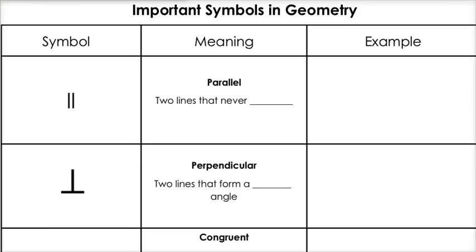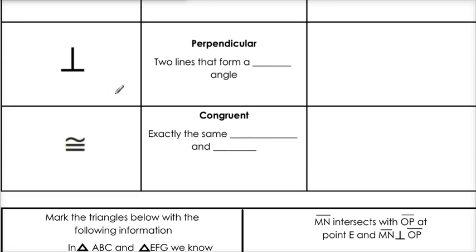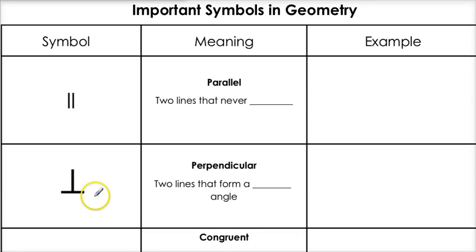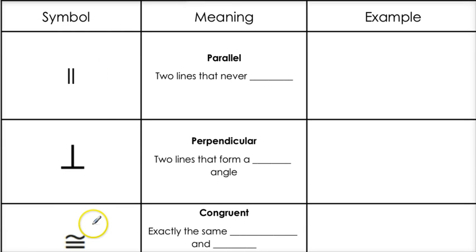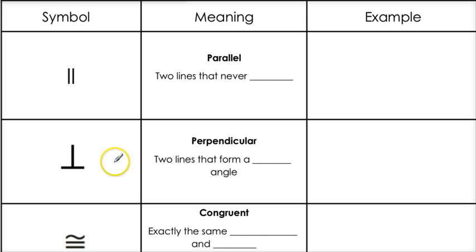Now that we know about points, lines, shapes, and angles — which are like the building blocks of geometry — we're going to move on to symbols. These are the three symbols you see here: one, two, three. These are the three most important symbols you're going to be seeing in geometry this year. You've got to know what they mean and how to use them. Super important — I'm going to be saying them all the time.